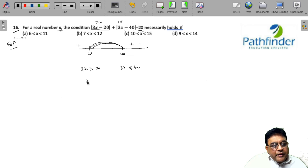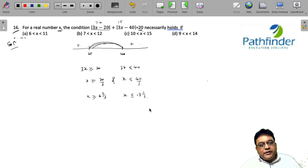So, what does it mean? X must be greater than equal to 20/3 and x must be less than equal to 40/3. So, which means x must be greater than equal to 6 and 2/3 and x must be less than equal to 13 and 1/3.